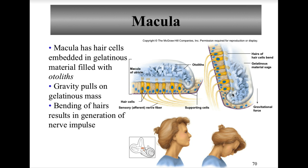Here you can see the macula structure in better detail. Gravity pulls on that gelatinous mass downward, and therefore those hairs are able to move.